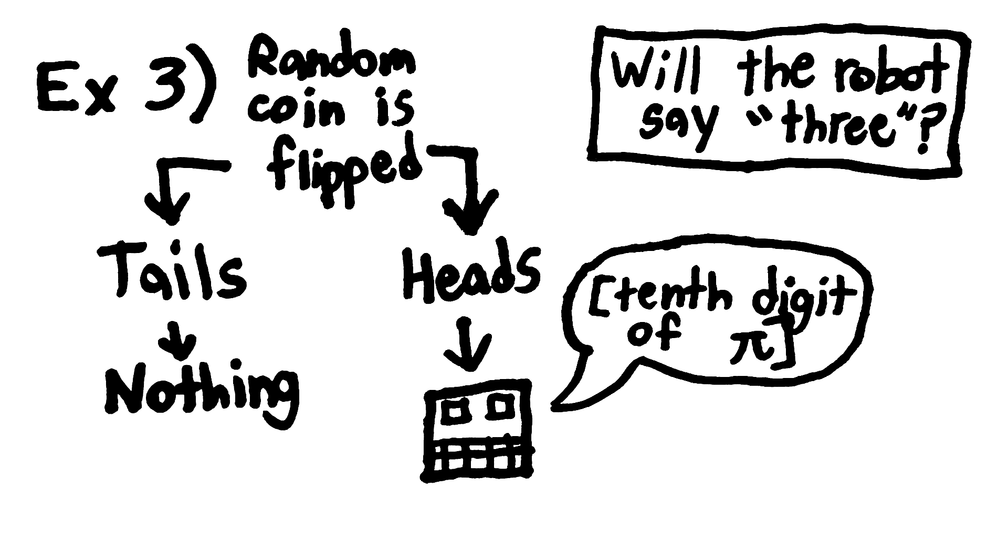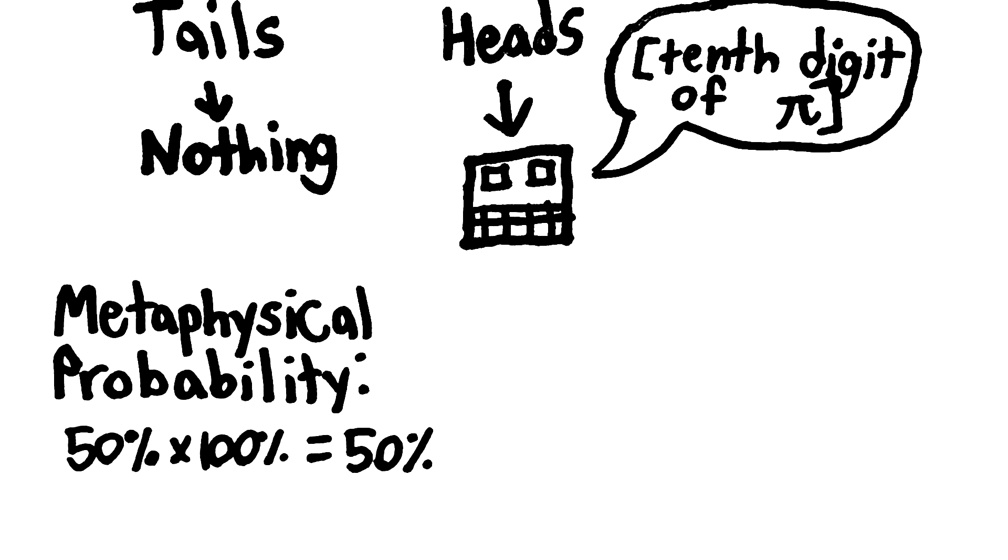This one is tricky. The tenth digit of pi is, in fact, 3. So in terms of metaphysical probability, there's a 50% chance that the robot will say 3.